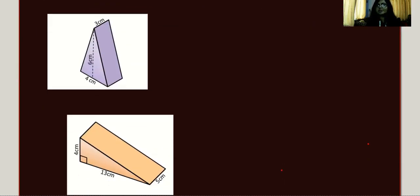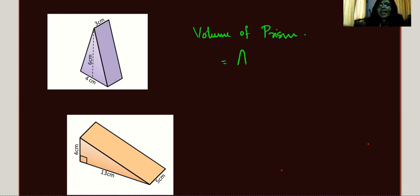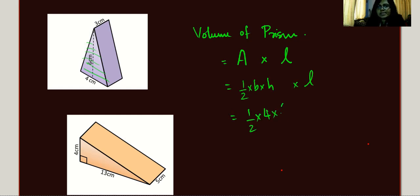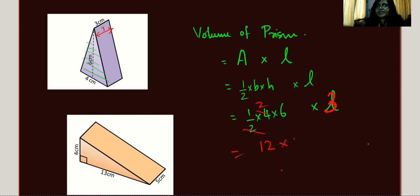Let's take some examples for volume of prism. For the first example, the base is a triangle. Volume equals area of the triangle times length, which is half times base times height times length. So it's half times 4 times 6, then times 3. That gives 12 times 3, which equals 36 cm³.